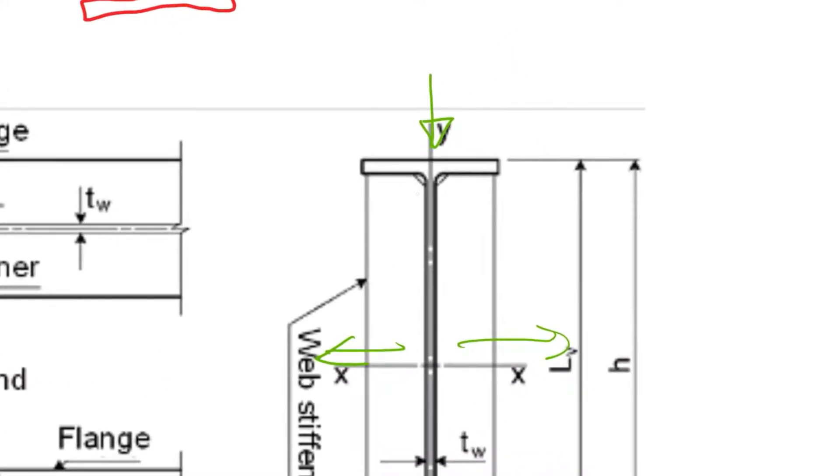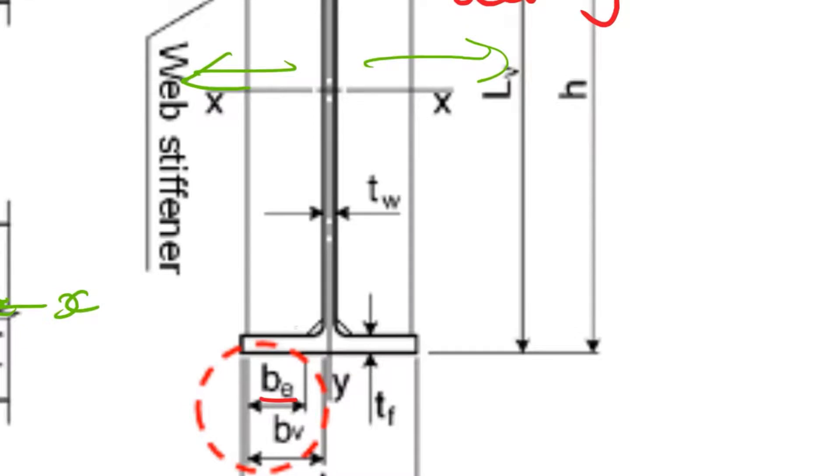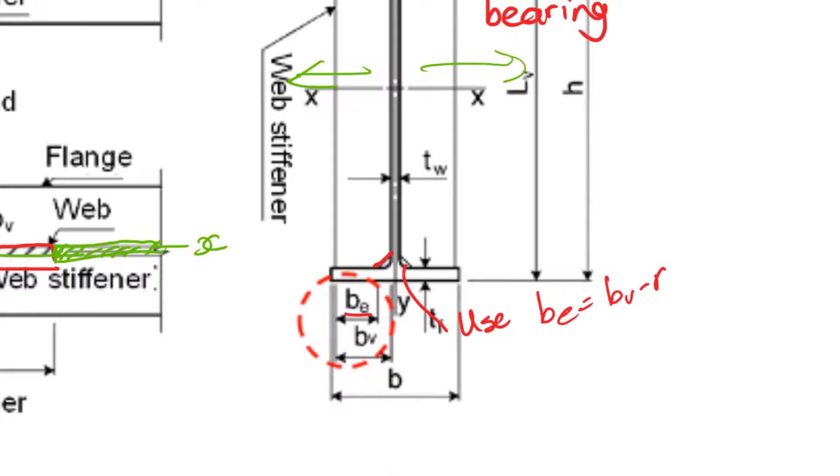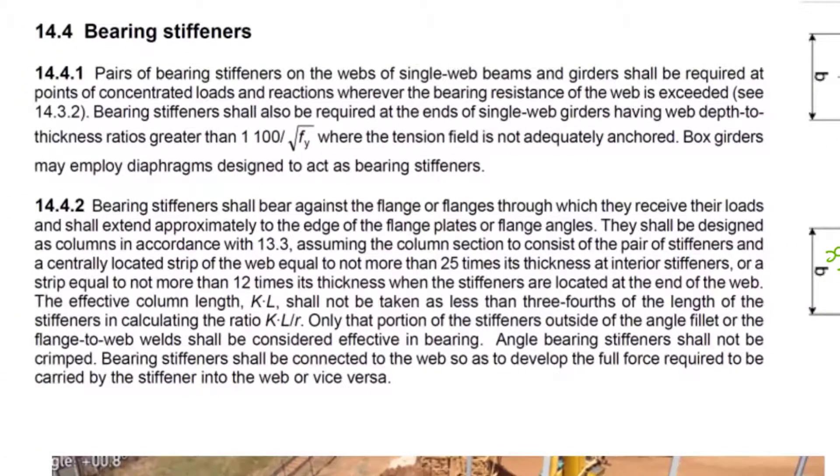Then you've got to check bearing resistance. It's the same as above, except now we only use that area there - we exclude the radius or radii for bearing. When you calculate bearing resistance, you have a bearing width be, so it's minus off the chamfer. Normally be equals bv minus r, where that is the radius of the curve.